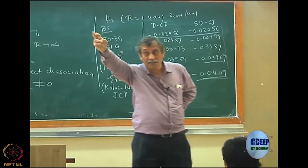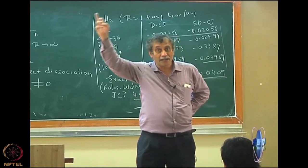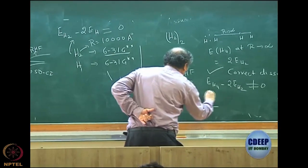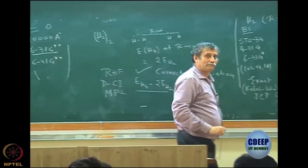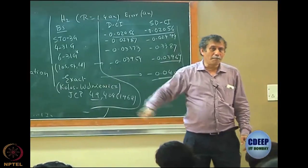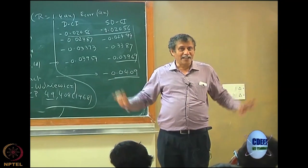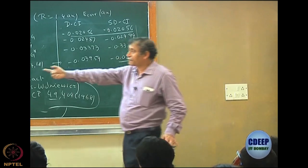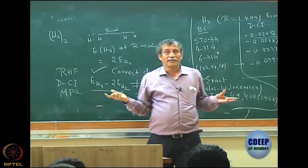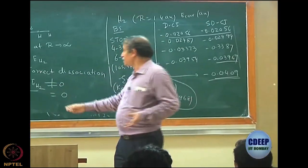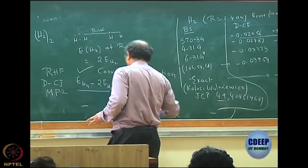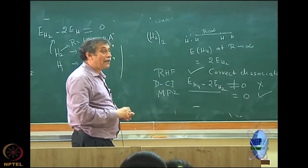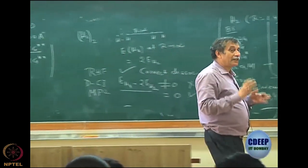Interestingly, if you do MP2 for the same system, E(H4) − 2×E(H2) = 0. So MP2 dissociates correctly while DCI does not. I mentioned earlier that certain approximations of DCI can give MP2, but a full DCI is different — and actually worse. This leads to a very important discussion of what is called theoretical model chemistry.